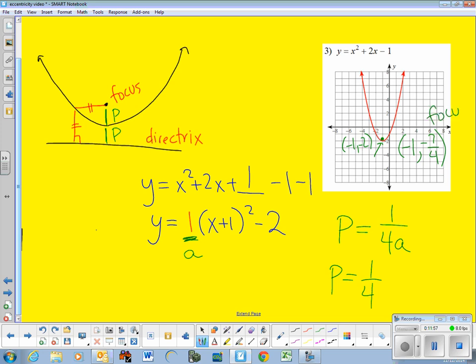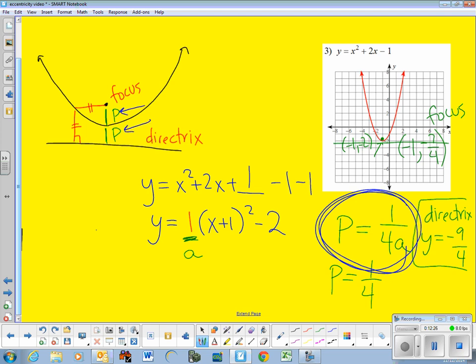The directrix is going to be a horizontal line that goes right here, which is y equals, how far down is that? If the vertex was two down, we need to go another quarter down. So, that's two and a quarter or negative nine-quarters. So, this formula is the key to finding the distance p, which is right here, and that will help you, using the vertex, find the focus and the directrix.